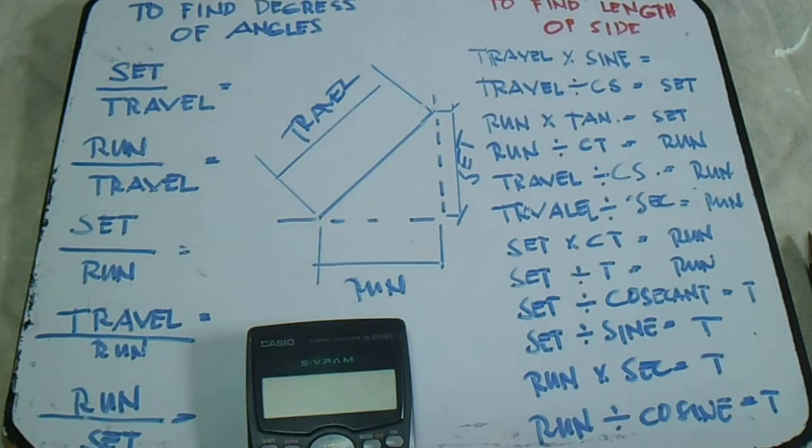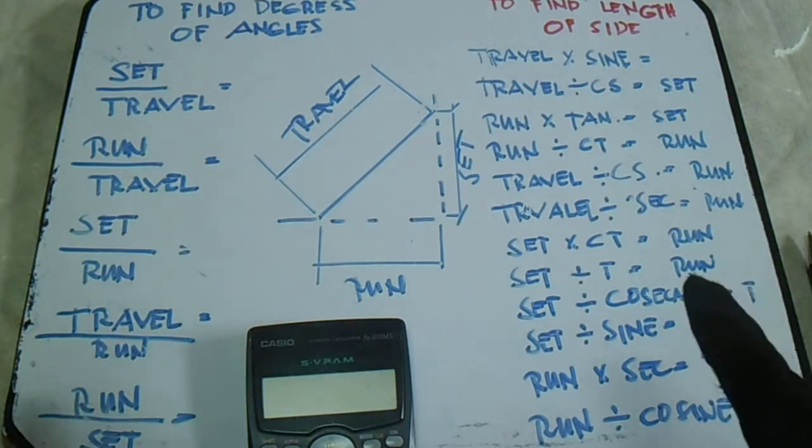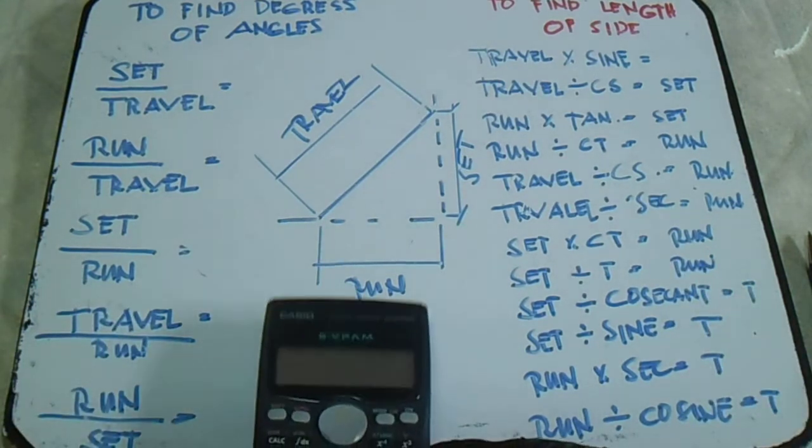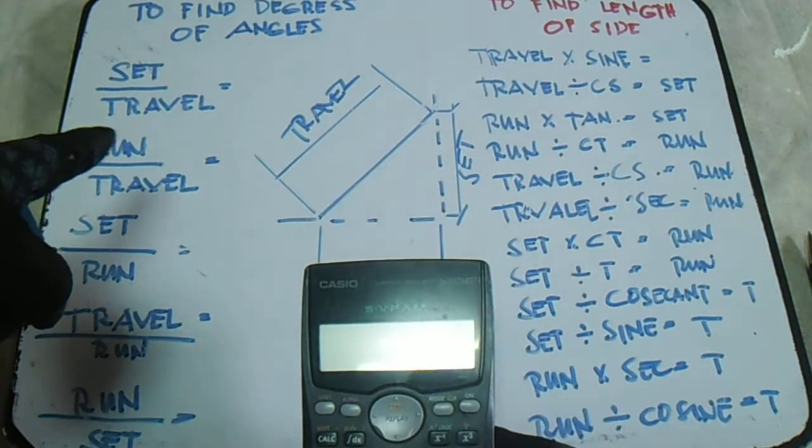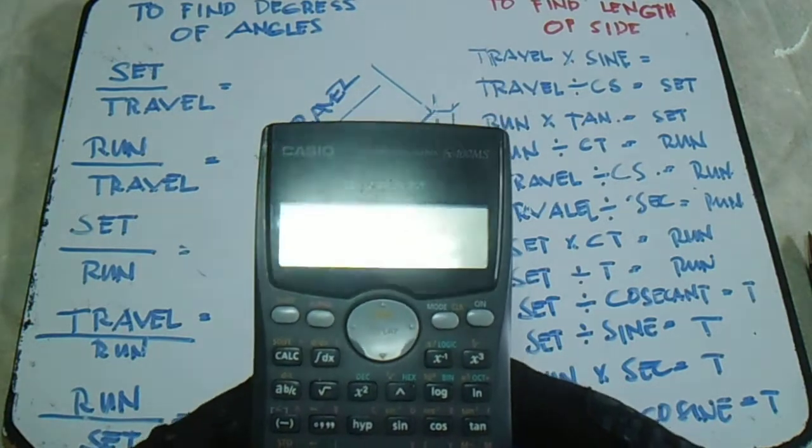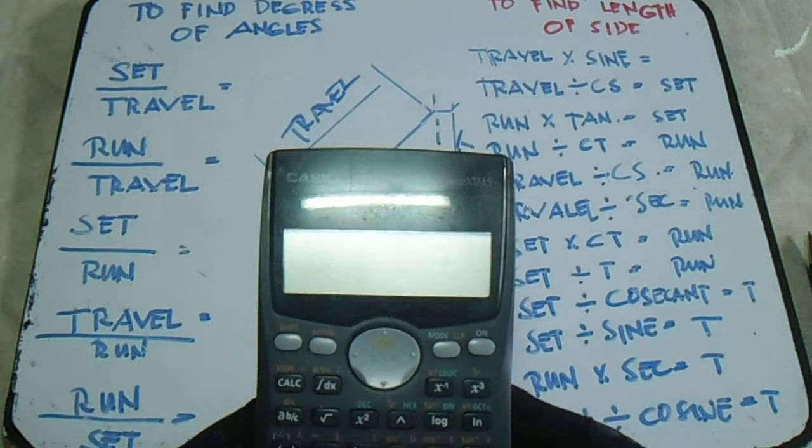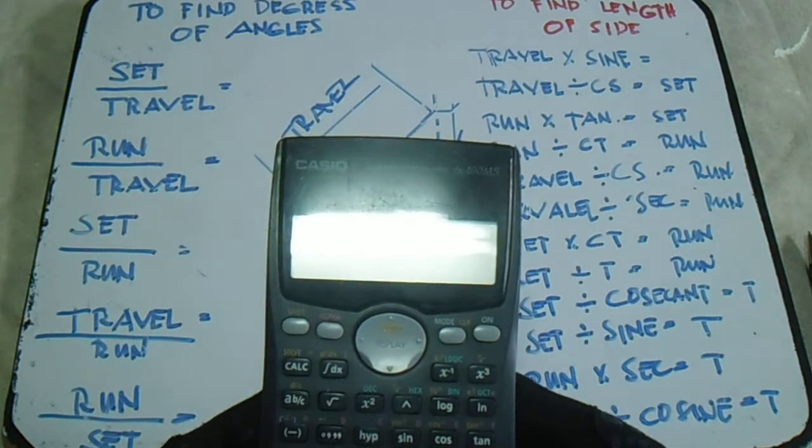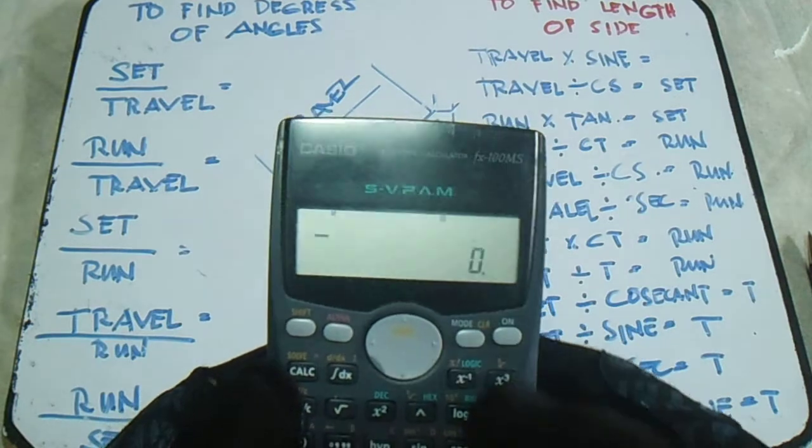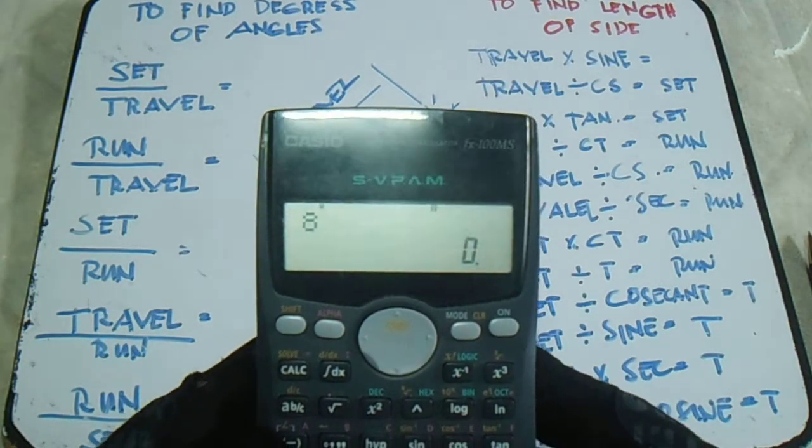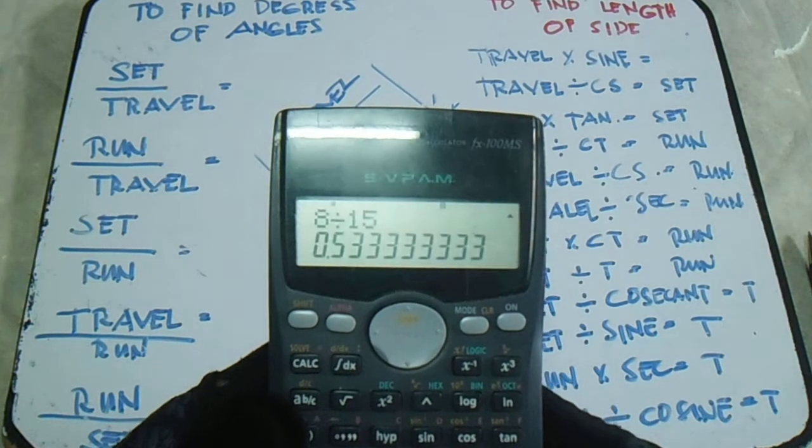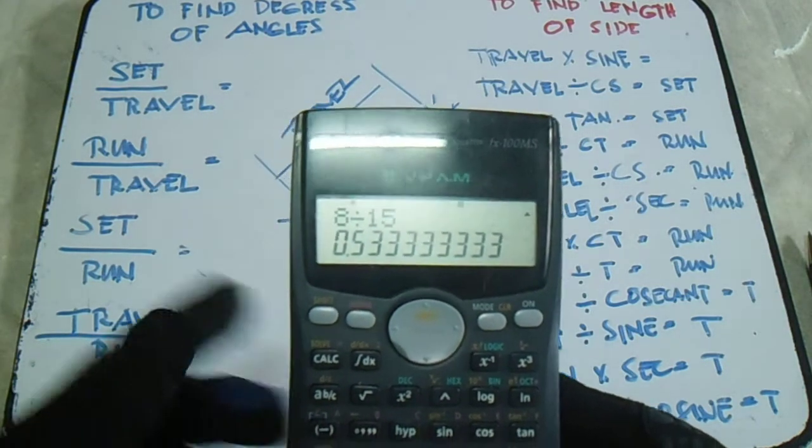Let's say an example with set and travel. We will find the degrees. Let's say we have a set of 8 divided by travel. Let's say our travel is 15, and then this is sine.